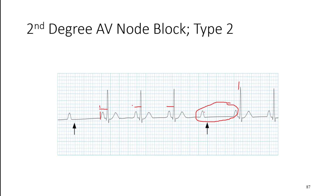So that is second-degree AV node block Type 2. The big difference is that while there is a dropped beat, there is no progressive increase in the PR interval. There's still a dropout, but it happens without the PR interval getting progressively longer.